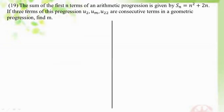The sum of the first n terms of an arithmetic progression (AP) is the same as the first n terms of another AP.